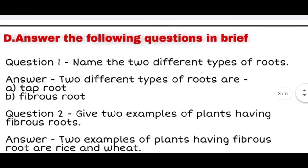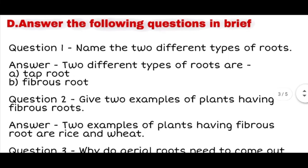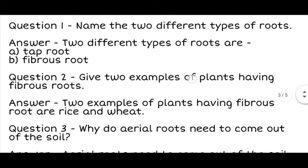Now let us do the question answers. First question: Name the two different types of roots. The answer is: Two different types of roots are tap root and fibrous root. Question two is: Give two examples of plants having fibrous roots. The answer is: Two examples of plants having fibrous root are rice and wheat. As you know, all cereals have fibrous roots.